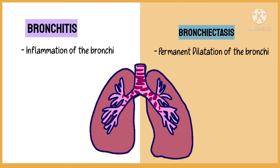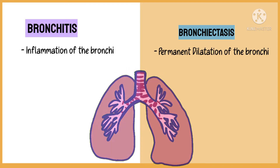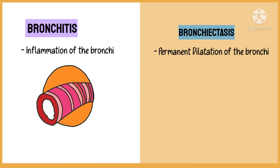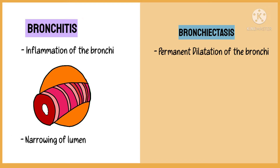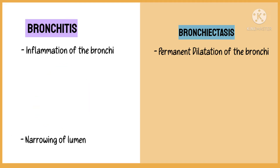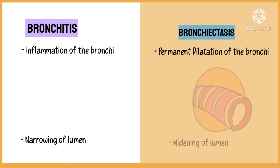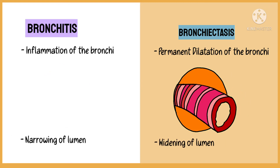Bronchitis is the inflammation of the bronchi, while bronchiectasis is the permanent dilation of the bronchi. In bronchitis, due to the swelling of the pipe, the lumen becomes narrow, while in bronchiectasis it becomes wider.